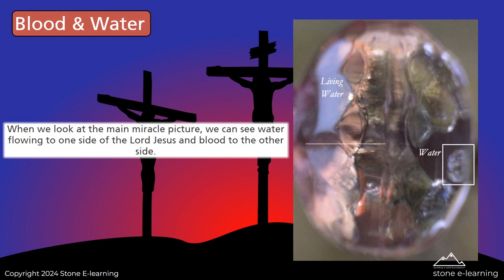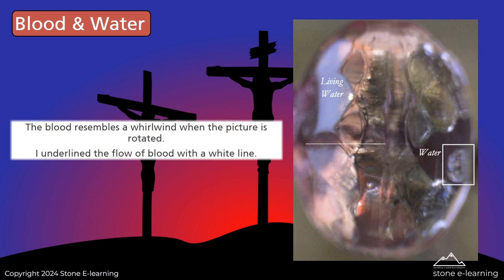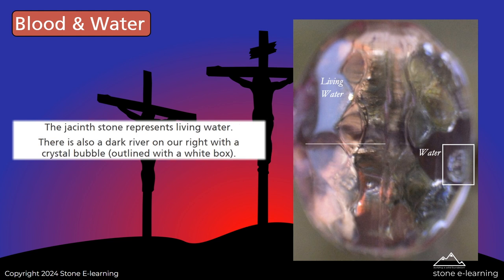When we look at the main miracle picture, we can see water flowing to one side of the Lord Jesus and blood to the other side. The blood resembles a whirlwind when the picture is rotated. The flow of blood is underlined with a white line. The Jacinth Stone represents living water. There is also a dark river on our right with a crystal bubble outlined with a white box.